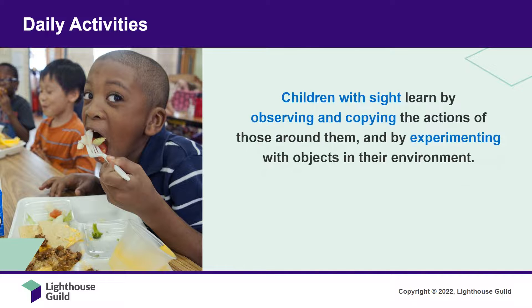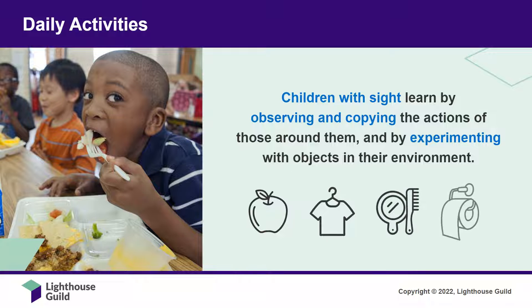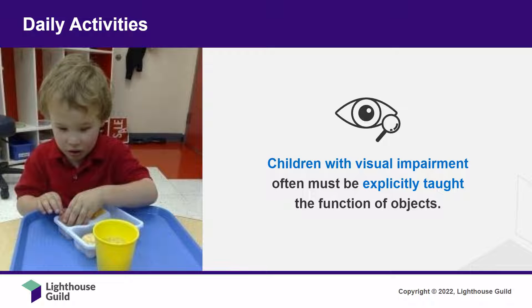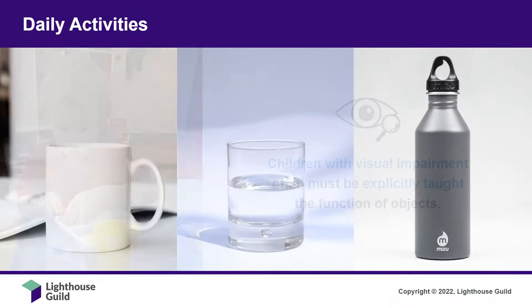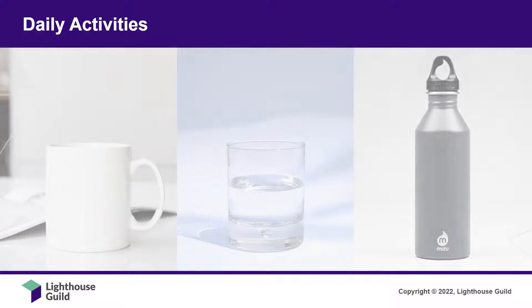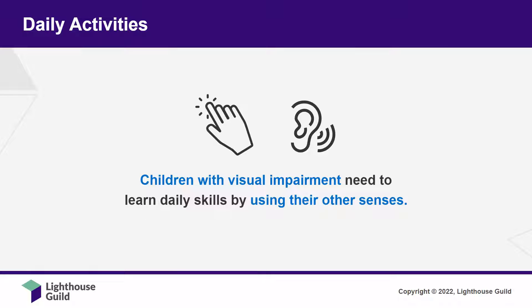Children with sight learn how to do everyday activities such as eating, dressing, grooming, and toileting on their own, mostly by observing and copying the actions of those around them, and by experimenting with objects in their environment. Children with visual impairment, on the other hand, often must be explicitly taught the function of objects. For example, learning that a coffee mug, a glass, and a water bottle all look and feel slightly different, but they have the same function. They also need to learn daily skills by using their other senses, mainly touch and hearing.